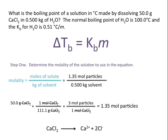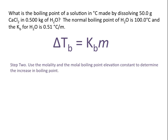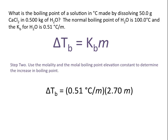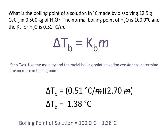We take the 1.35 moles of particles and divide by the kilograms of solvent (0.5 kg of water), giving a molality of 2.7 molal. Plugging into the equation: 0.51°C per molal × 2.7 molal — units of molal cancel — gives a boiling point increase of 1.38°C. We then add that to the boiling point of the pure solvent: 100°C + 1.38°C = 101.4°C, which is the boiling point of the new solution.